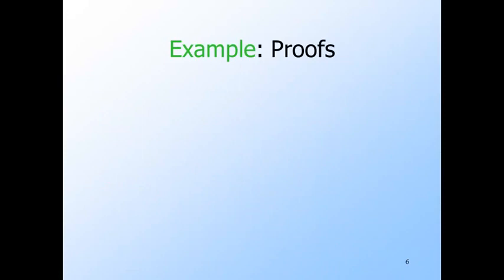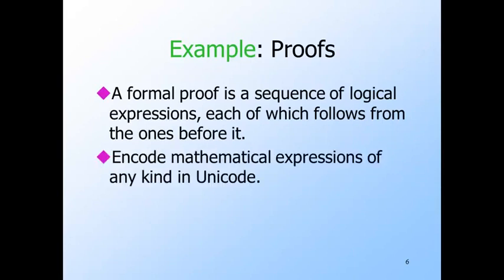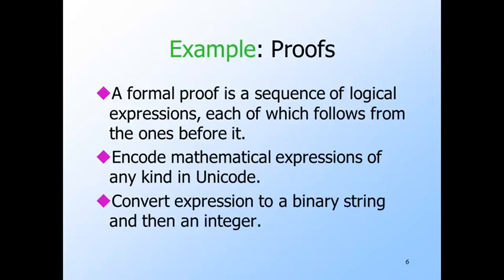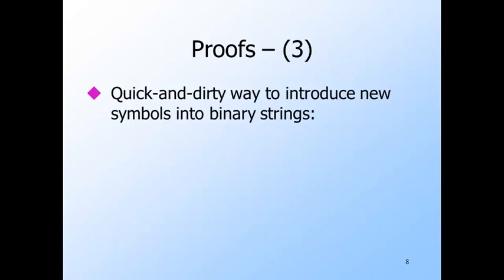Here's another wild example: proofs. A proof can be viewed as a sequence of expressions or assertions in mathematical form, each of which is either given or follows from a previous statement in the sequence by certain logical rules. We can encode mathematical expressions in Unicode, which has pretty much any symbol you would use in mathematics. We can convert any expression to a binary string and then to an integer. There's a small glitch: a proof is a sequence of expressions, not a single expression, so we need a way to separate a sequence of expressions and indicate whether an expression is given or follows from previous ones. We thus need to introduce two new symbols into our strings.